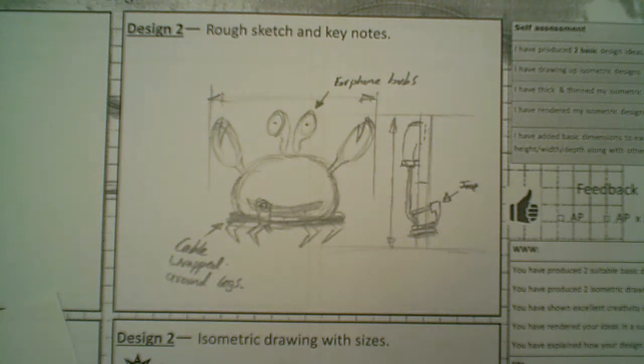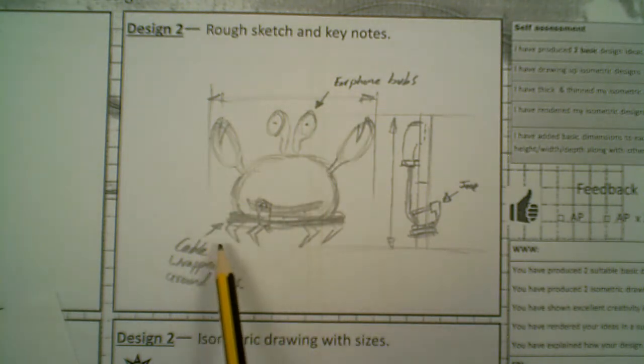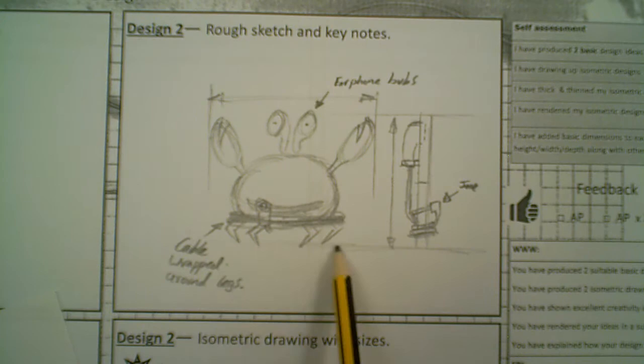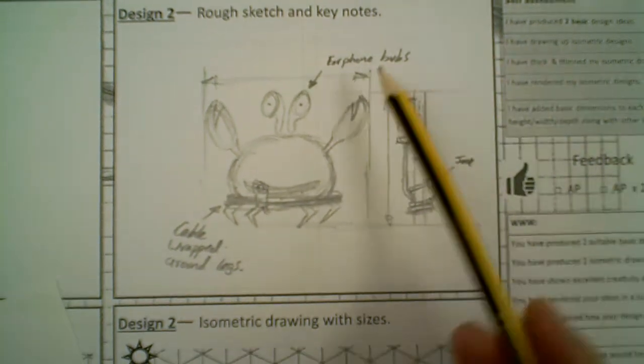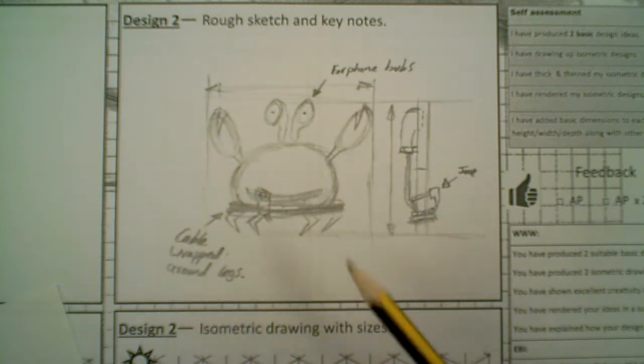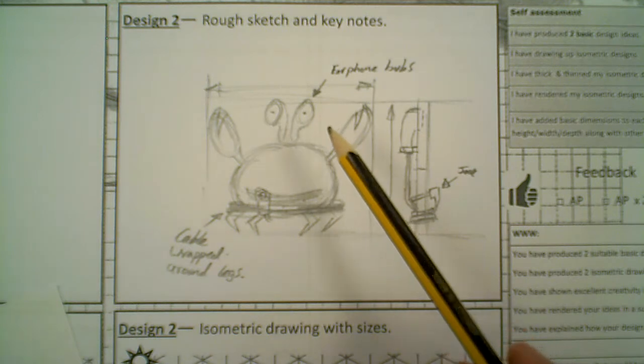So the next thing to do is transfer our crab into isometric. What I'm going to think about is the crab has been within a square effectively. I don't have to divide this up, I'll draw it on the actual sheet, but the crab is going to be within a square and you could almost grid this up in order to help transfer it onto the grids later on.